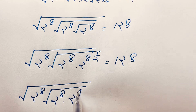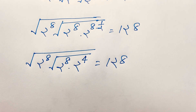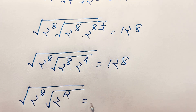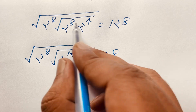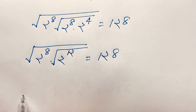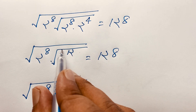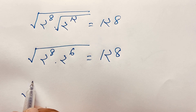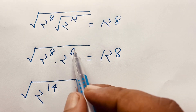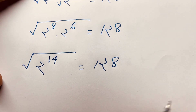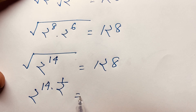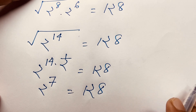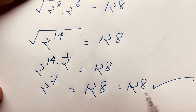Continuing the verification: square root of 2 to the power 8 times 2 to the power 4, and adding exponents 4 plus 8 gives 12, so we have square root of 2 to the power 12. Applying the square root gives 2 to the power 6, then combining again: square root of 2 to the power 14 equals 2 to the power 7, which equals 128. Left hand side equals right hand side, confirming our answer.